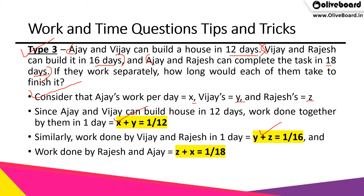We write three equations: X + Y = 1/12, Y + Z = 1/16, and Z + X = 1/18. These are work-per-day values because if it takes 12 days to finish the work, the work done in one day is 1/12 — this is the fundamental principle from the beginning. Getting the equations correctly is the key concept; if the equations are correct and you avoid calculation errors, your answer will be correct.